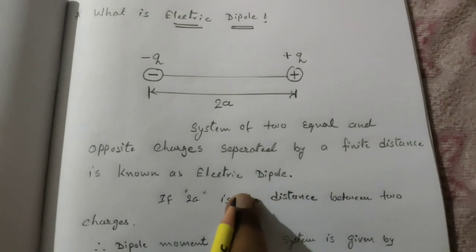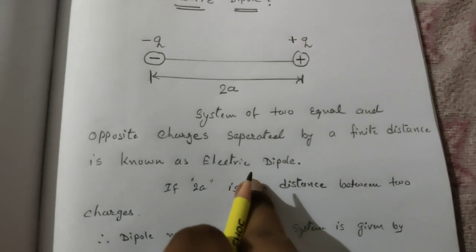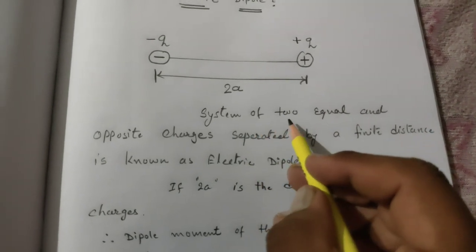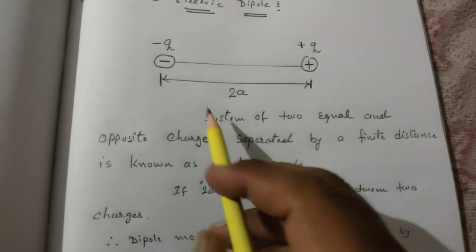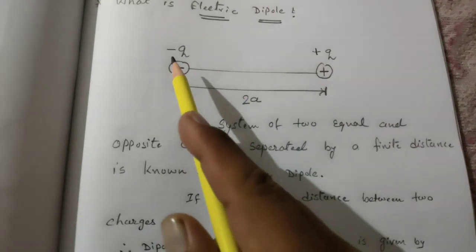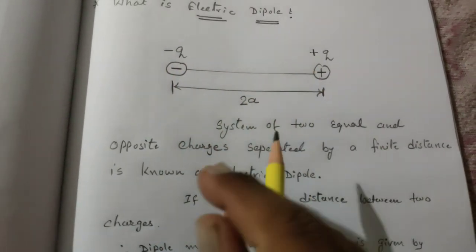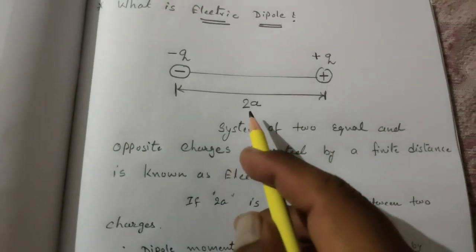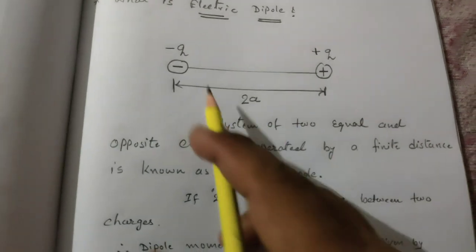In physics, how is it defined? A system of equal and opposite charges separated by finite distance is known as electric dipole. So this is the simple definition of electric dipole. Now let us analyze this. System of two equal and opposite charges means the magnitude of the charges would be same and its polarity - positive and negative charges - are different.